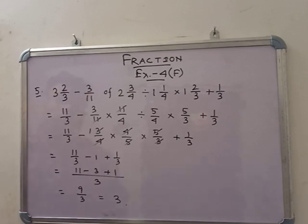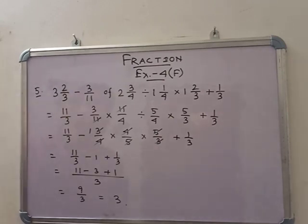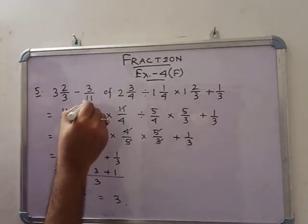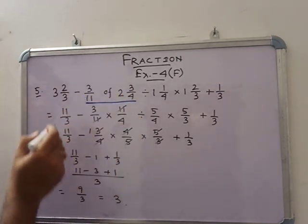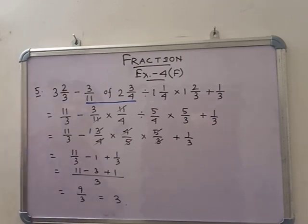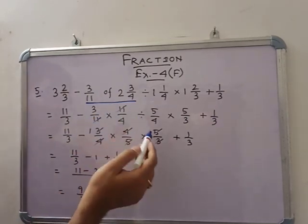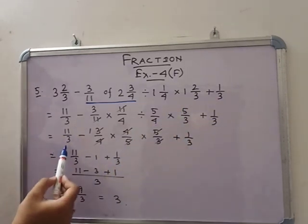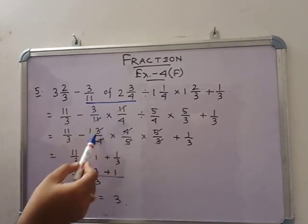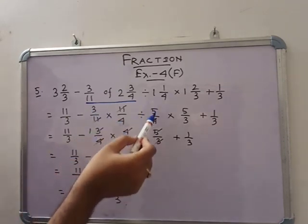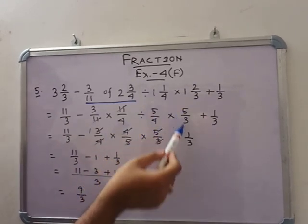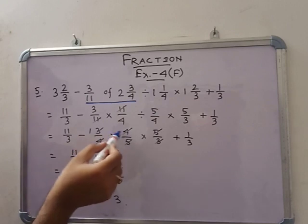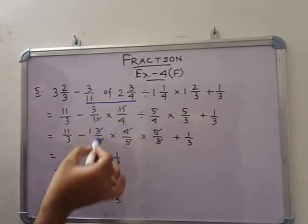In number 5, see that: 3 of 2 by 3 minus 3 by 11 of 2 of 3 by 4 divided by 1 of 1 by 4 into 1 of 2 by 3 plus 1 by 3. Firstly, we are doing the 'of' work. So: 11 by 3 minus 3 by 11 into 11 by 4 — 11 and 1 will cancel. Divide by 5 by 4 into 5 by 3 plus 1 by 3. Then: 11 by 3 minus 3 by 4 division — into 4 by 5 into 5 by 3. Cancel: 4 and 4, 5 and 5, 3 and 3. Only 1 is remaining.